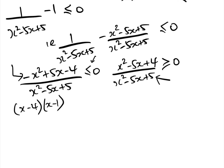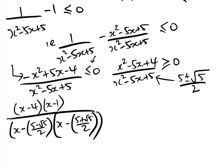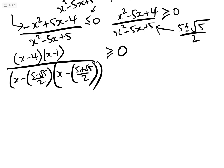For the denominator, using the quadratic formula −b ± √(b² − 4ac) / 2a, we get (5 ± √(25 − 20)) / 2 = (5 ± √5) / 2. So the denominator factorizes as (x − (5 − √5)/2)(x − (5 + √5)/2), and the whole expression must be ≥ 0.